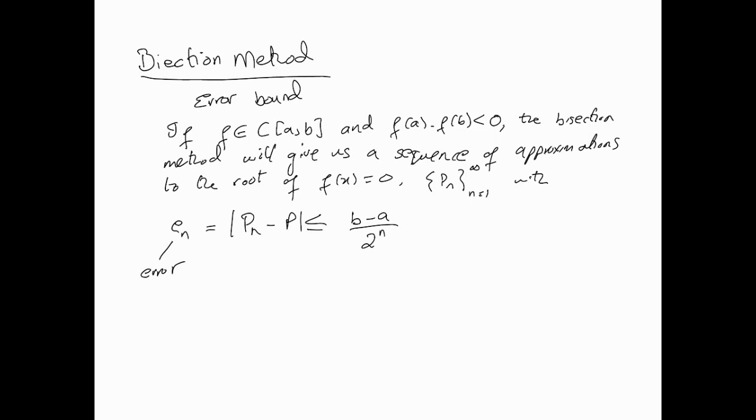The error, e_n, is the absolute value of p_n minus p. Now please be careful here—this is not something that can be filled because we don't know what p is. In certain situations we may know when we're testing the method, but practically, p_n is the approximation, the nth approximation of the root, and p is supposedly the actual root.